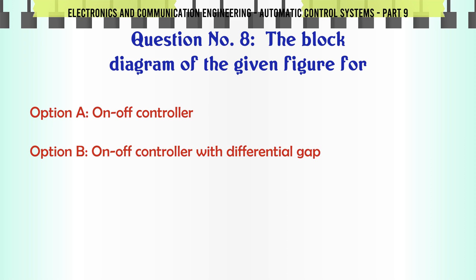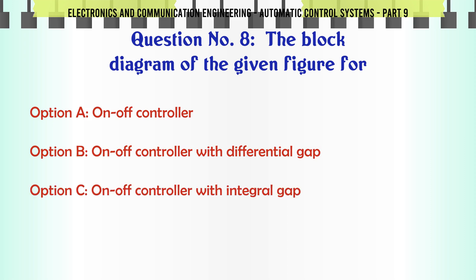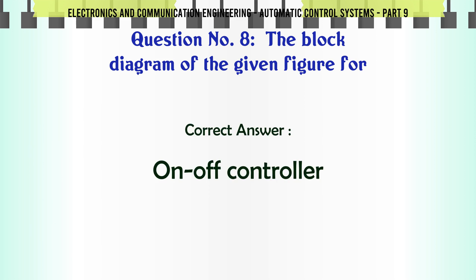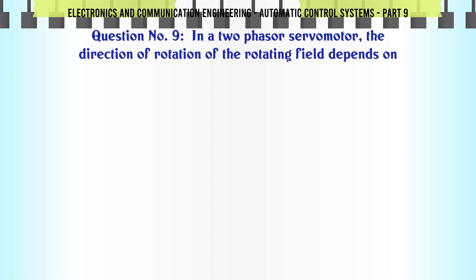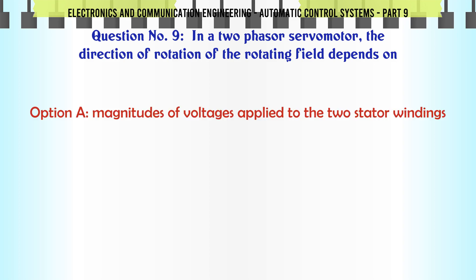The block diagram of the given figure is for: A. On-off controller, B. On-off controller with differential gap, C. On-off controller with integral gap, D. Three-position controller. The correct answer is: On-off controller.